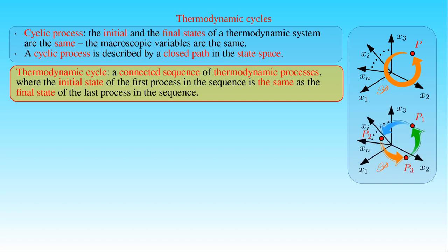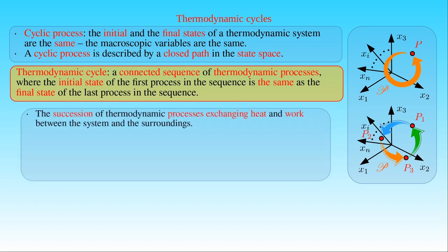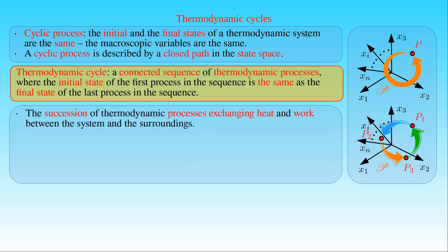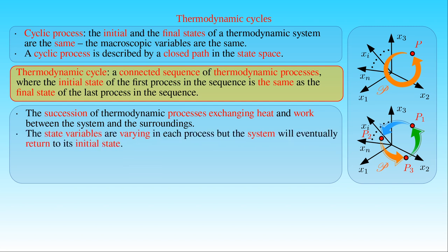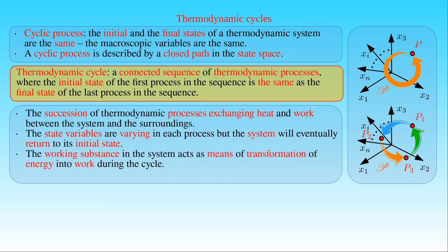Here we can see three distinct thermodynamic states represented by the points P1, P2, and P3 in the n-dimensional state space, which are connected with the path P. The point P1 denotes the initial and the final state of the system, and the states P2 and P3 are the intermediate states in the thermodynamic cycle. A typical thermodynamic cycle consists of a succession of thermodynamic processes exchanging heat and work between the system and the surroundings, while varying state variables such as pressure, volume, and temperature, and eventually returning the system to its initial state. The working substance in the system acts as a means of transformation of energy into work. This cycle is important as it allows for the continuous operation, where heat is converted into work or vice versa by repeating the cycle. Such repeated thermodynamic cycles can be seen in the case of a moving piston in engines or the expansion and compression of the working fluid in refrigerators.